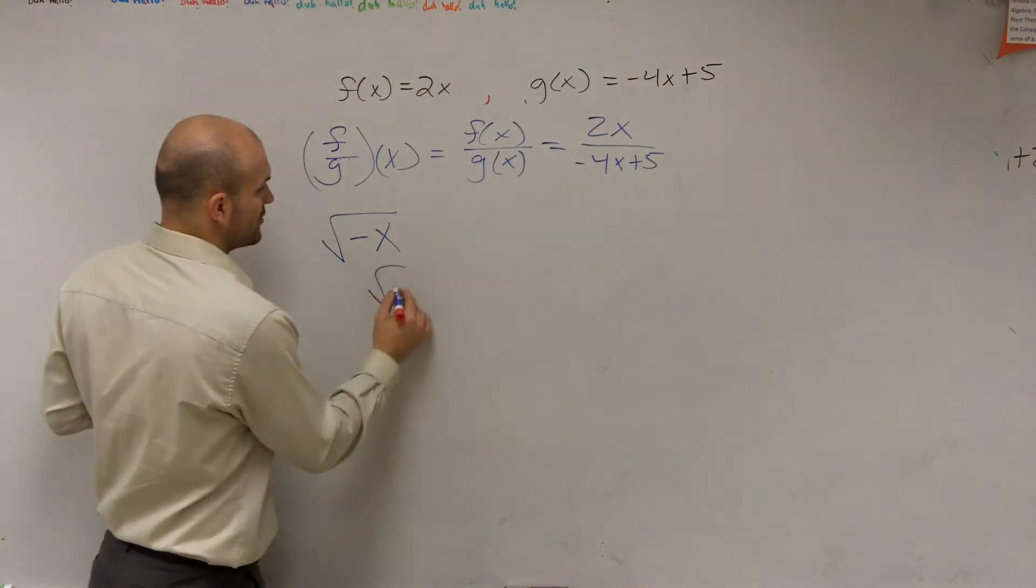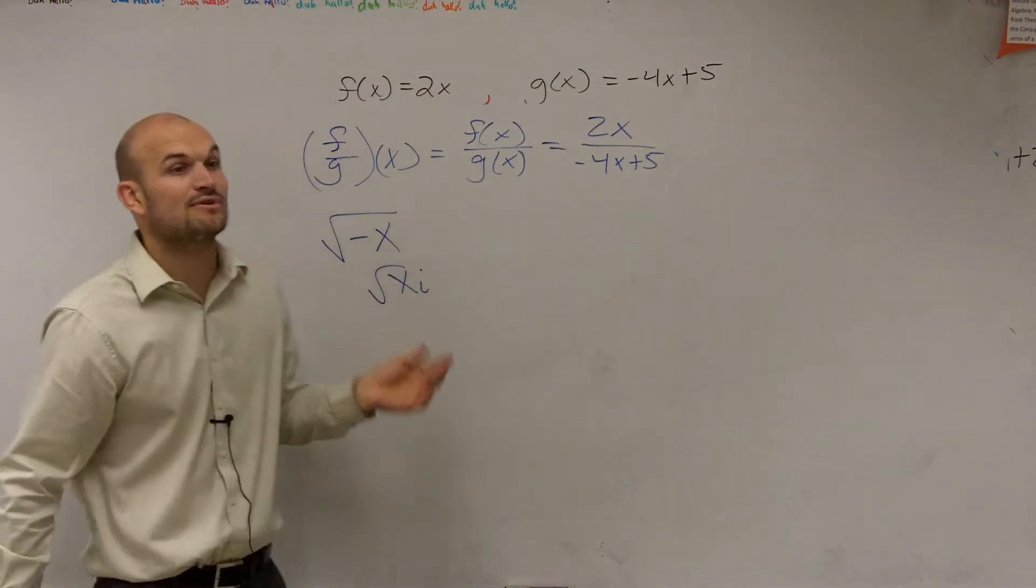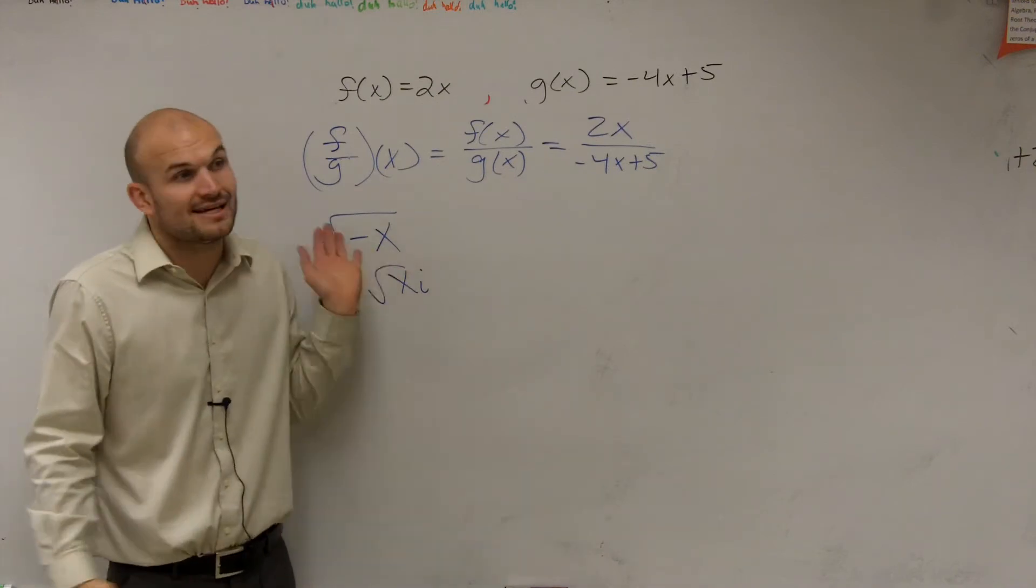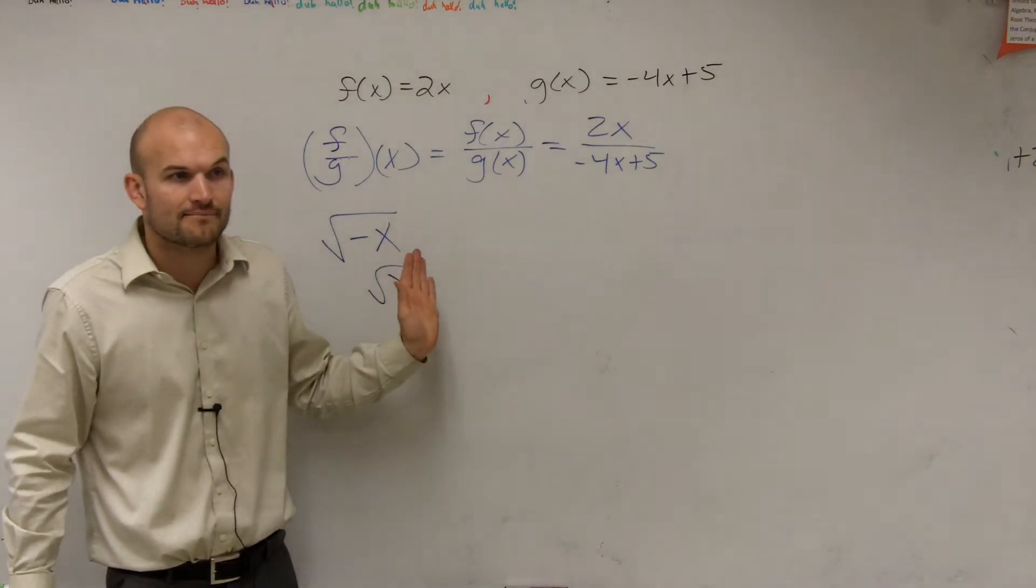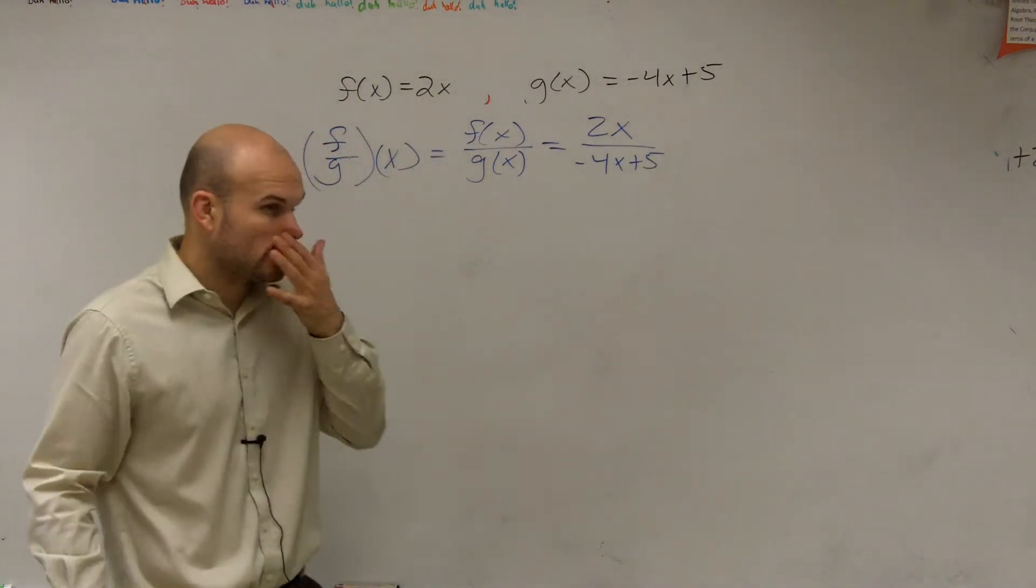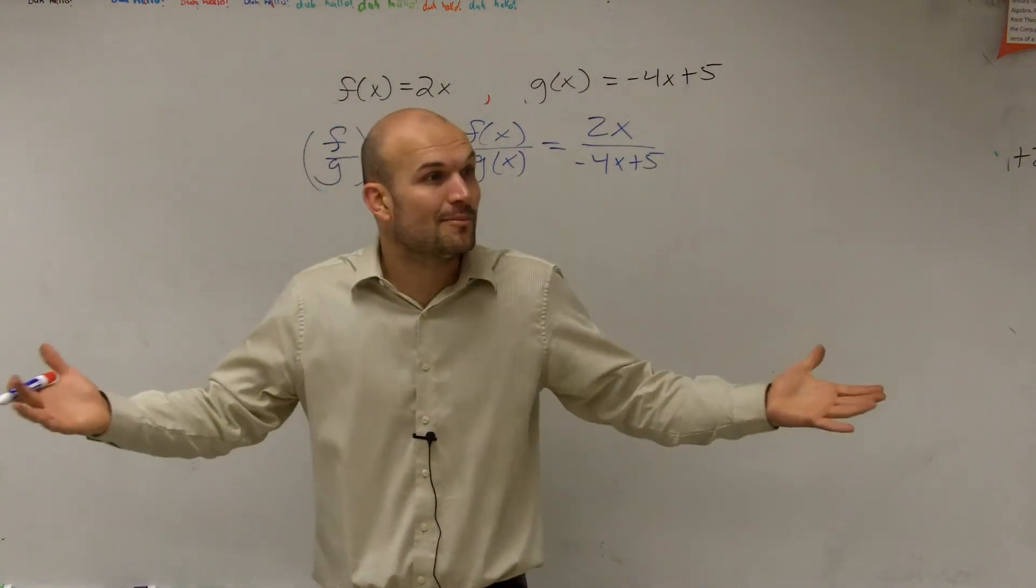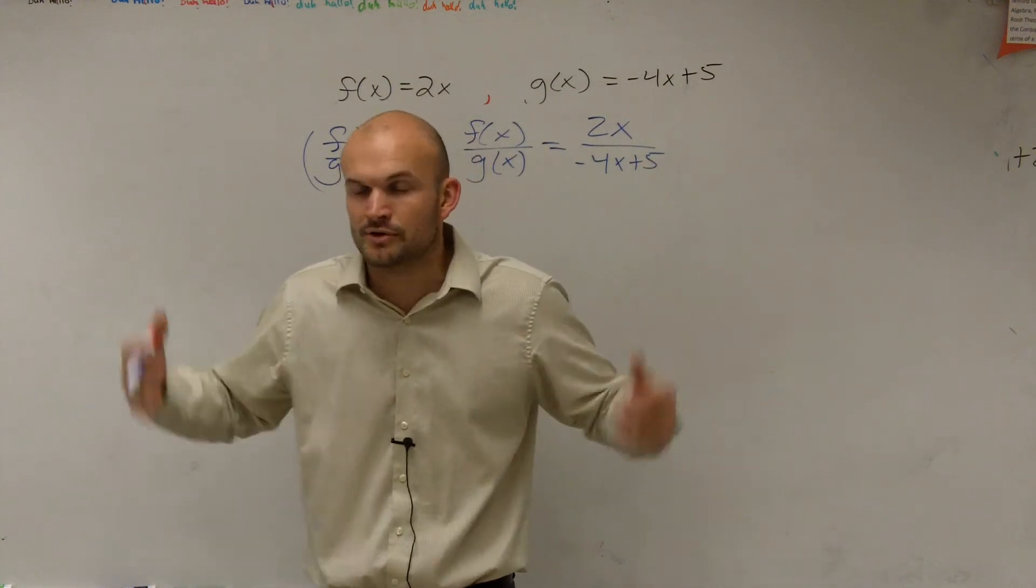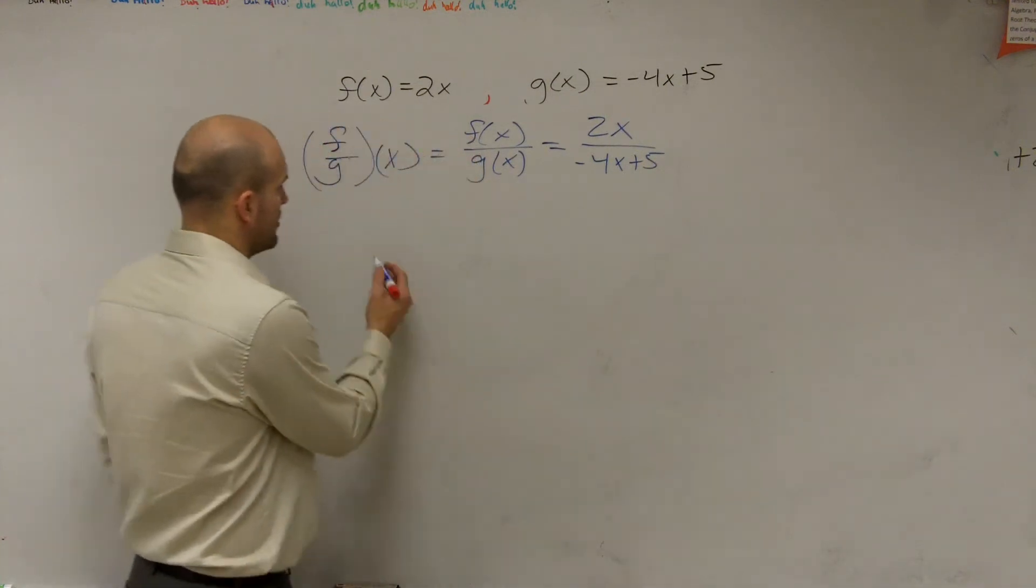But yeah, you took out the negative, right? So square root of x times i. And we said i was imaginary, right? Because you could not take the square root of a negative number. So one thing we know about is we even had to create a whole new set of numbers because we cannot take the square root of a negative number. Now, what about this?